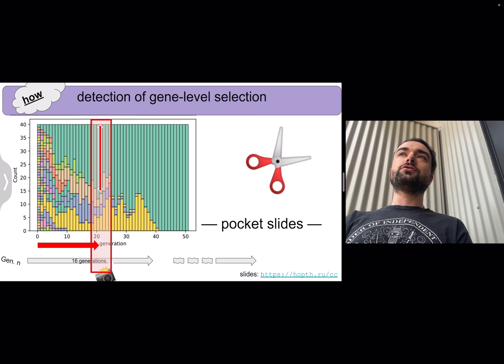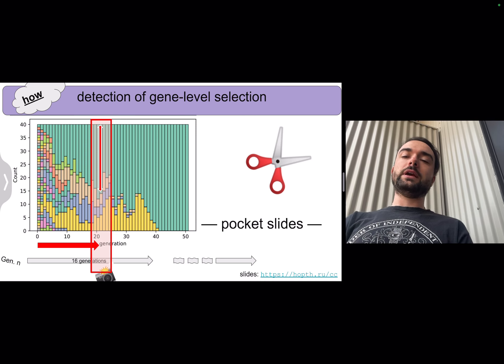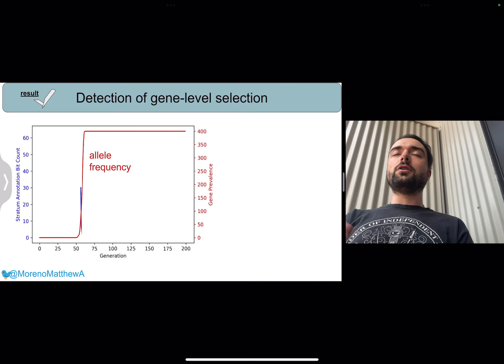That will allow us to differentiate genes that are increasing due to drift from those that are being actively selected for.